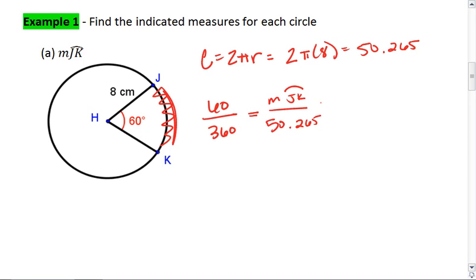I can cross multiply. I do 60 times 50.265. 3015.929 equals the measure of arc JK times 360. To solve for JK, I'm going to divide both sides by 360.